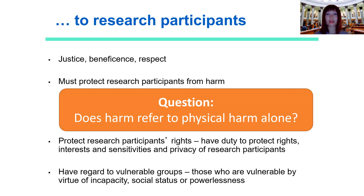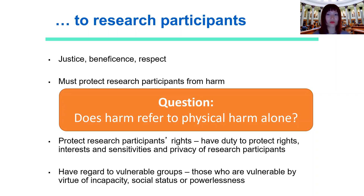The second category of ethical obligation is to research participants. This is probably the most common category we consider when conducting research, which is to protect our research participants from any kind of harm. I have a question here: does harm refer to physical harm alone? I invite you to think about that — what are the other forms of harm?